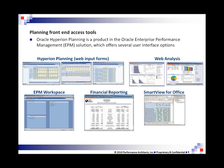There are many different front-end access tools for planning. On the top left of the slide, we have planning web input forms to get information in and out of planning. Web Analysis is a great reporting tool — it's a no-code solution for deploying dashboards and reporting over the web. You have the EPM Workspace, which is the central hub or landing page where you come into the application and can access various products. Financial reporting allows for highly formatted reports, books, batches, and things like that.